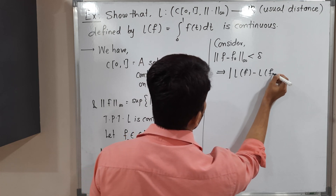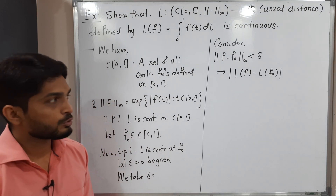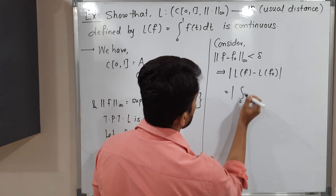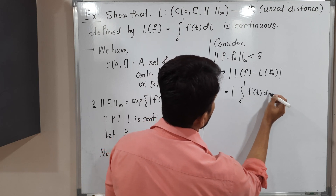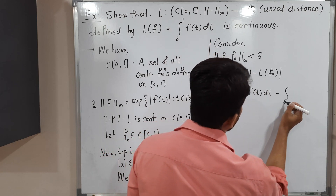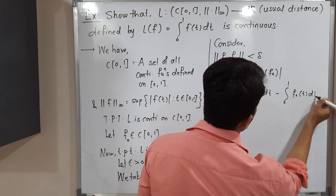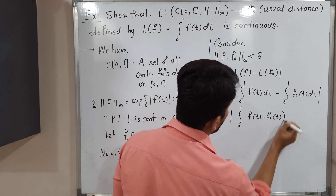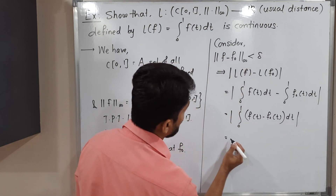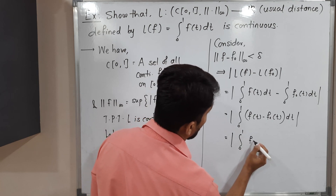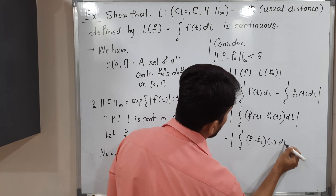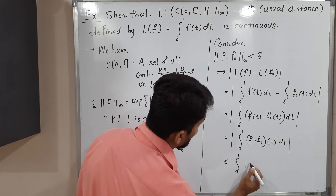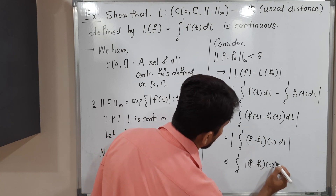We need to prove |L(f) − L(f₀)| < ε. Starting the work: this equals |L(f) − L(f₀)|. What is L(f)? It is the integral, so we write |∫₀¹ f(t) dt − ∫₀¹ f₀(t) dt|. Taking the integration common: this equals |∫₀¹ (f(t) − f₀(t)) dt|. Interchanging the mod and integration gives the inequality ≤ ∫₀¹ |f(t) − f₀(t)| dt.